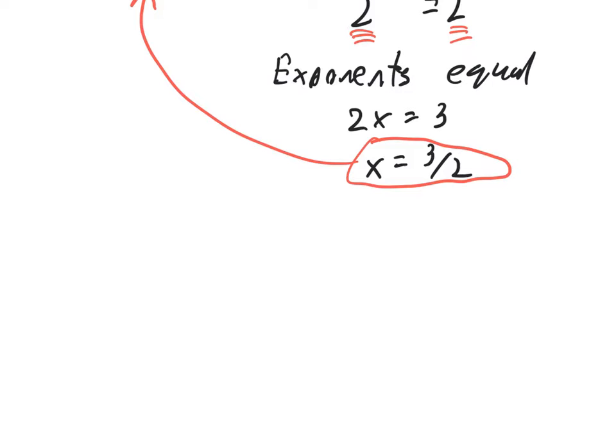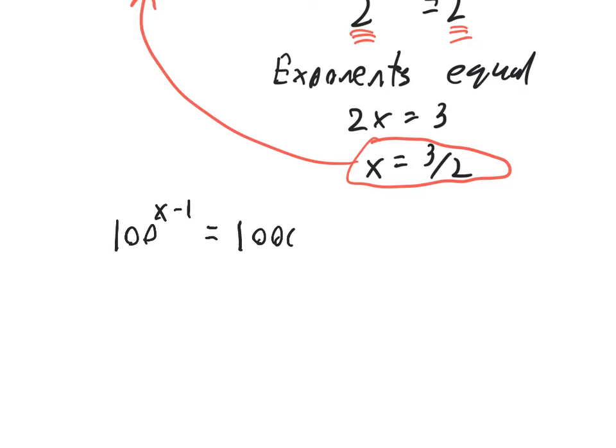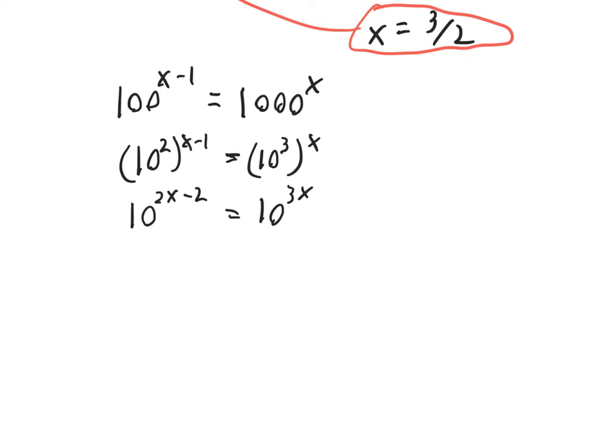Let's do one more example. Let's say you've got 100 to the x minus 1 is equal to 1,000 to the x. Can we write both sides using the same base? Well, 100 would be 10 squared. So the left side is 10 squared to the x minus 1. 1,000 is equal to 10 to the third. Then use your property of exponents. Multiply the exponents. So this is the same as 10 to the 2x minus 2. Take 2 times the x minus 1. And here, I've got 10 to the 3x.